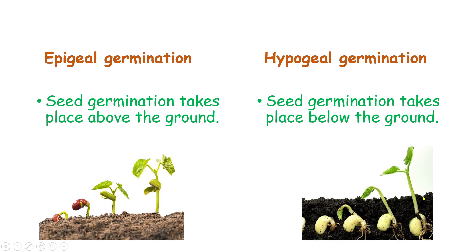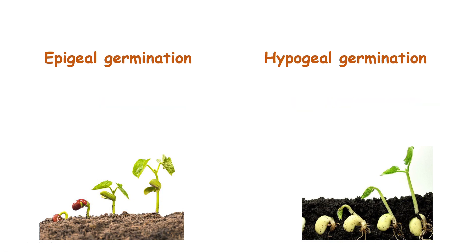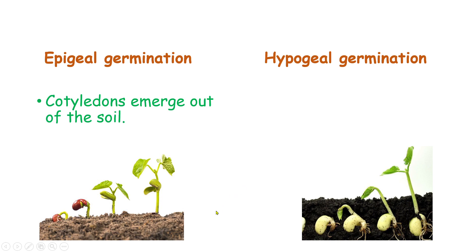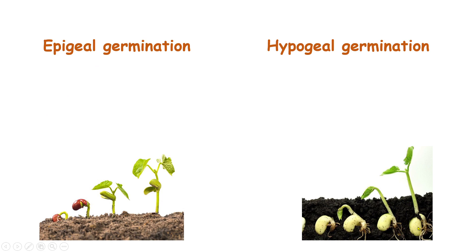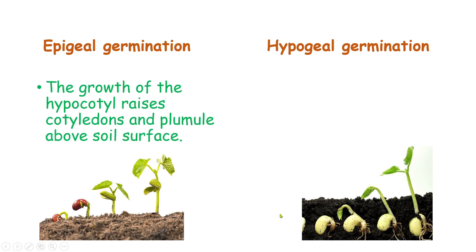In epigeal germination, the cotyledons emerge out of the soil. In hypogeal germination, the cotyledons remain inside the soil. In epigeal germination, the growth of the hypocotyl raises the cotyledons and plumule above the soil surface.